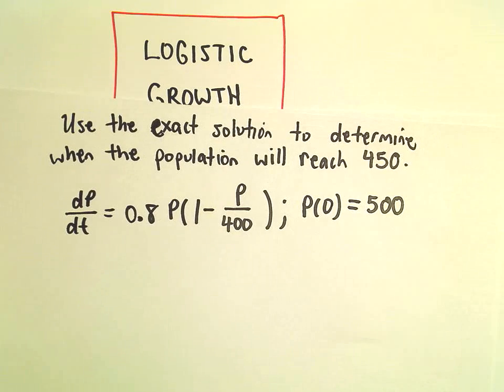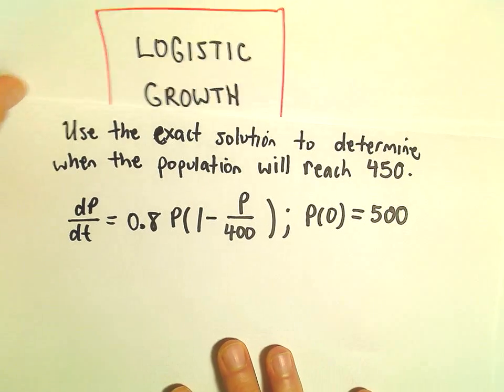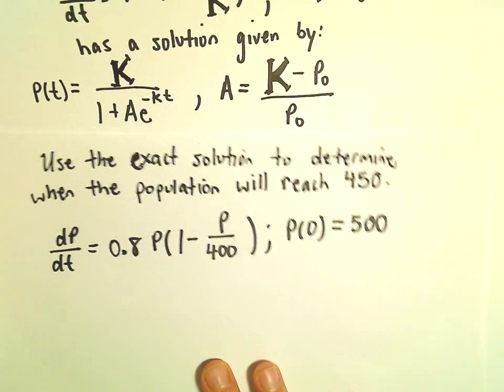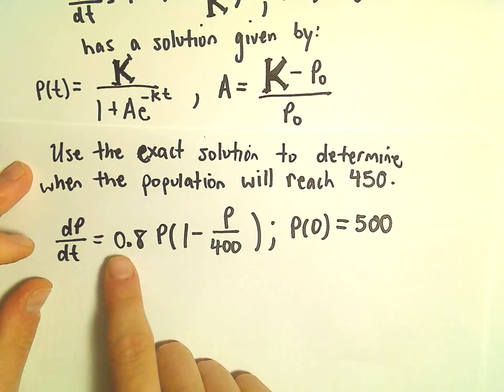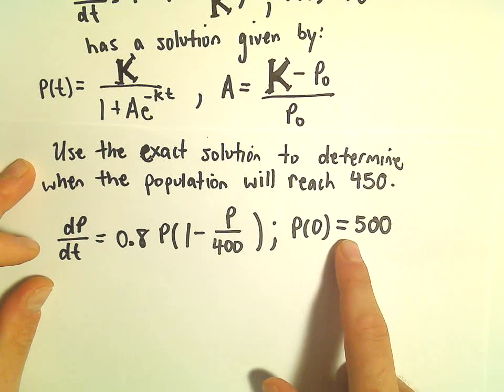So we're going to use this exact solution to determine when the population will reach 450. We're given dP/dt equals 0.8 times P times 1 minus P over 400, P sub 0 equals 500.